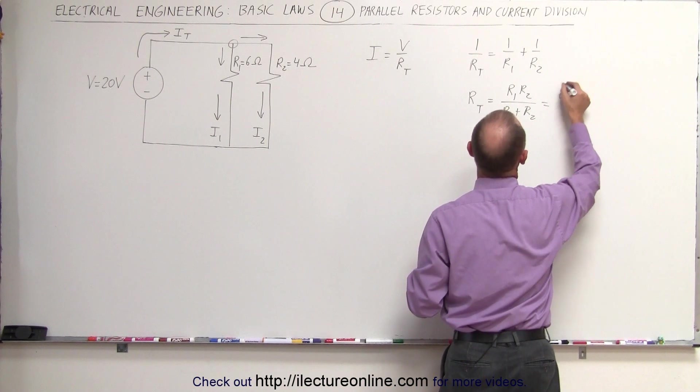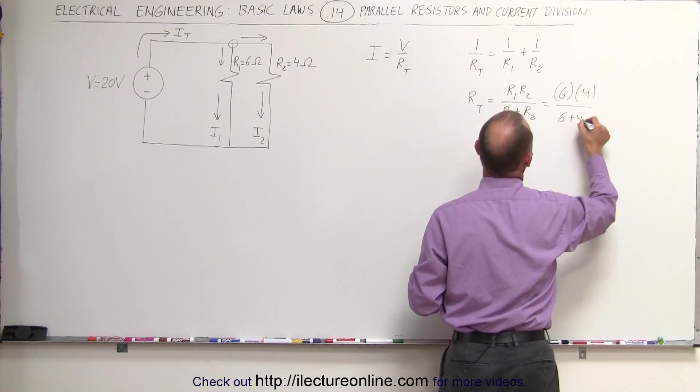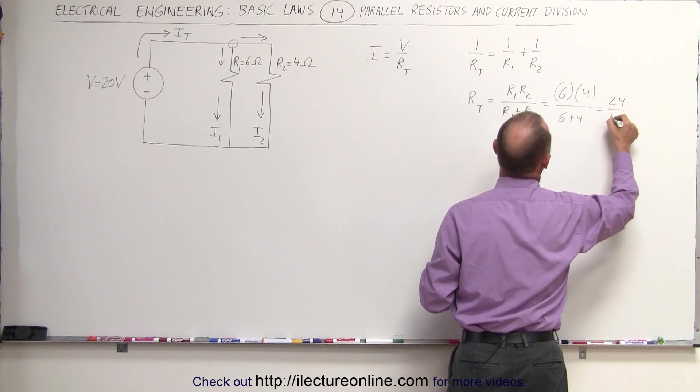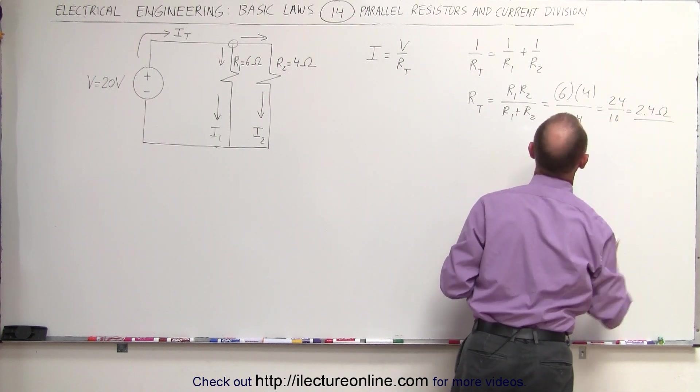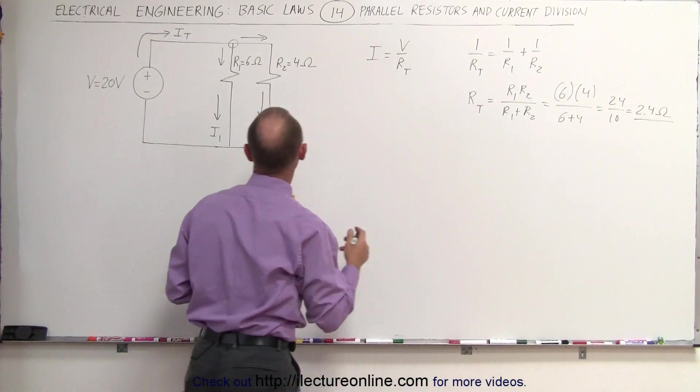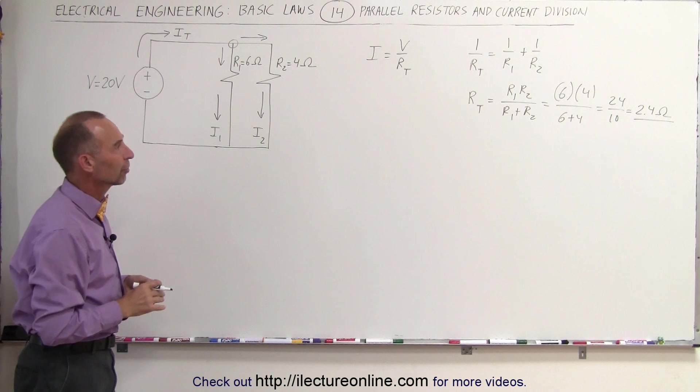In this case, R1 is equal to 6, R2 is equal to 4, and this is 6 plus 4, or 24 divided by 10, which is equal to 2.4 ohms. So the total resistance of a parallel circuit is always less than the smaller resistance in the parallel circuit.